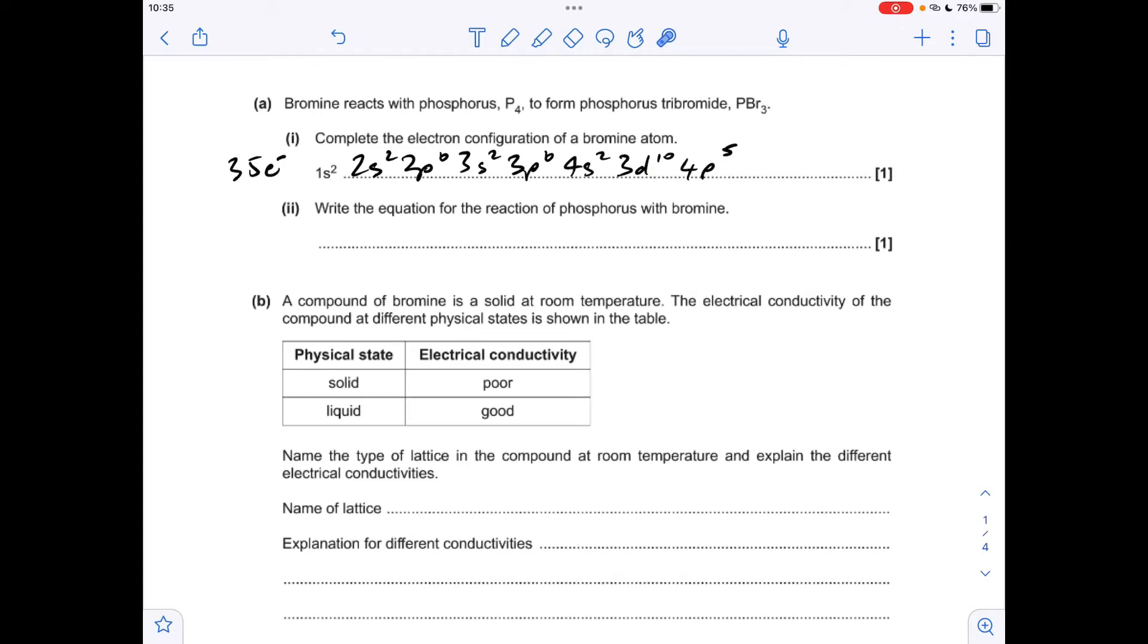Okay, so make a start. A bromine atom has 35 electrons so we have this electron configuration here. With the 4s and the 3d you could write them the other way around if you wanted to.